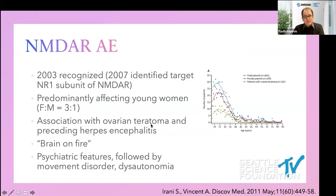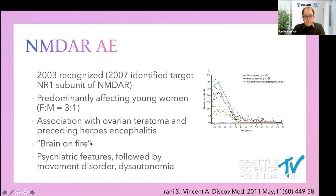There's a recognized association with ovarian teratoma, and increasing recognition that sometimes preceding herpes encephalitis triggers NMDA receptor encephalitis. This was popularized in the book Brain on Fire by a New York Post journalist, which subsequently became a Netflix movie. It's a bit difficult to watch because this young woman was dismissed by many medical professionals, including neurologists, through her journey — a humbling account of her tough experience with this disease.